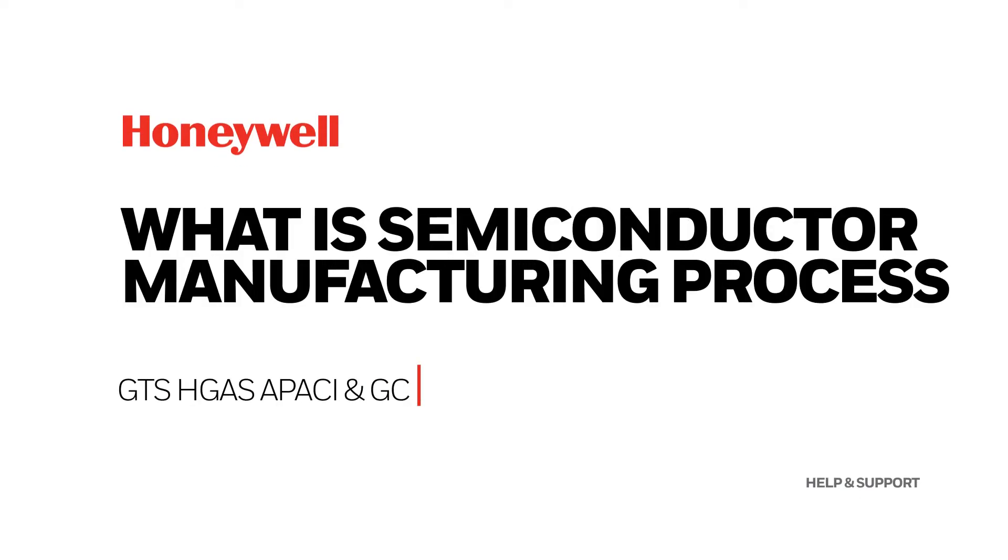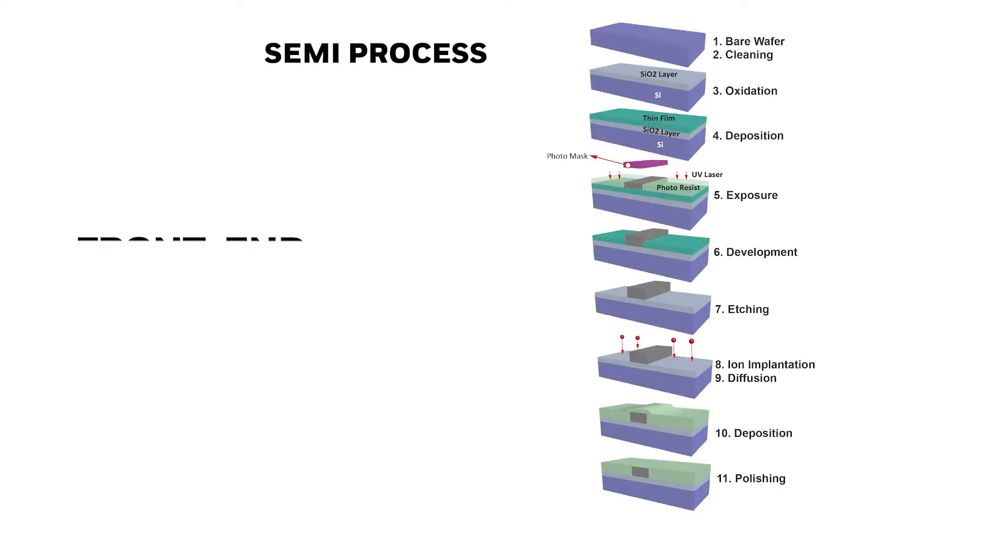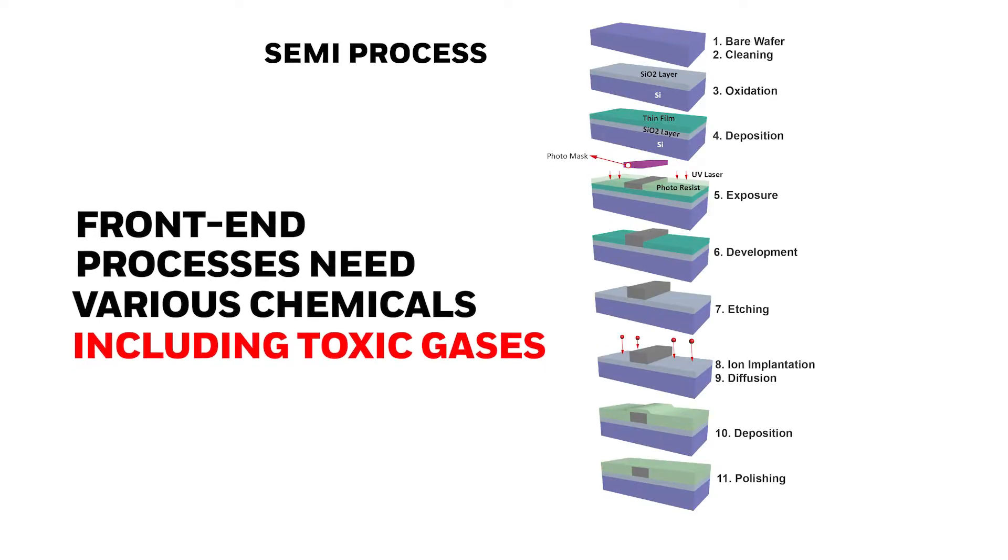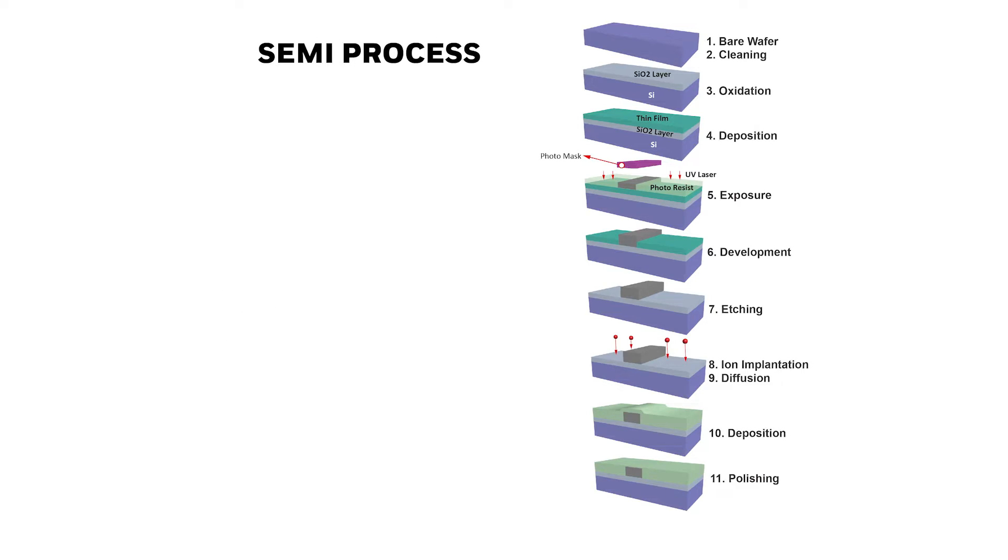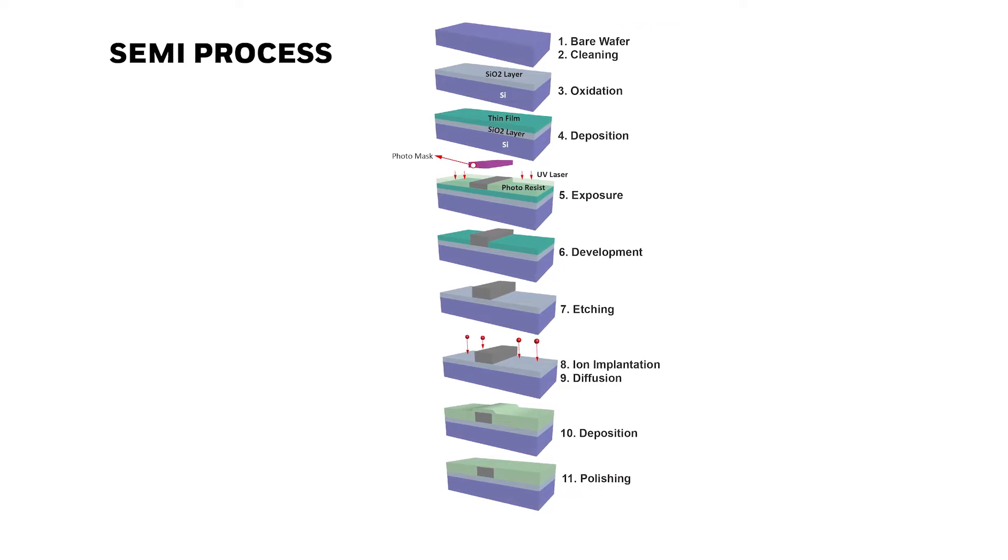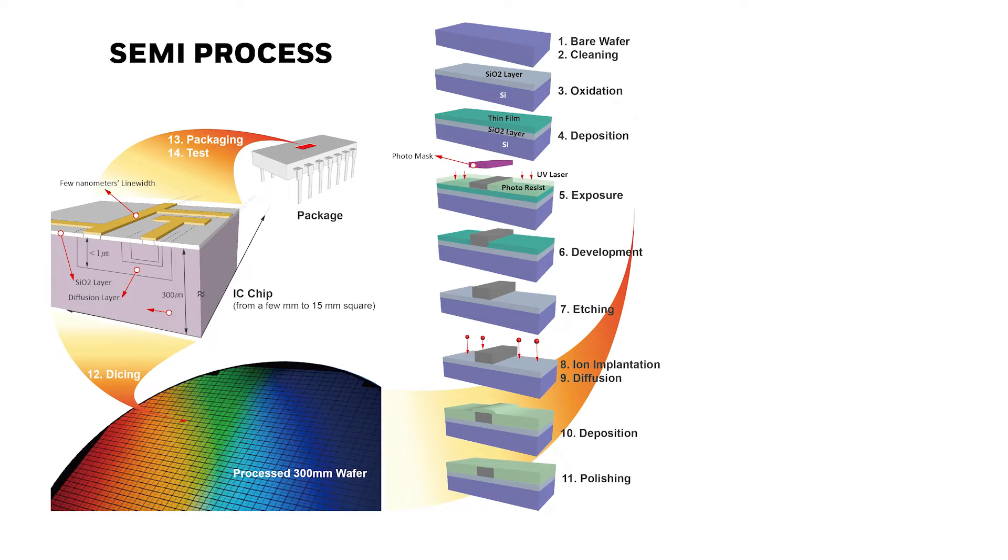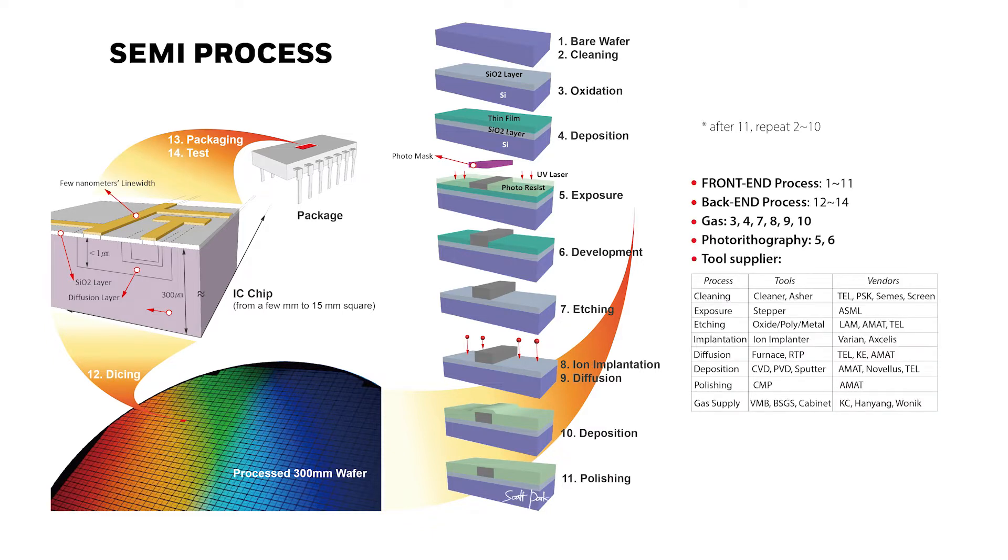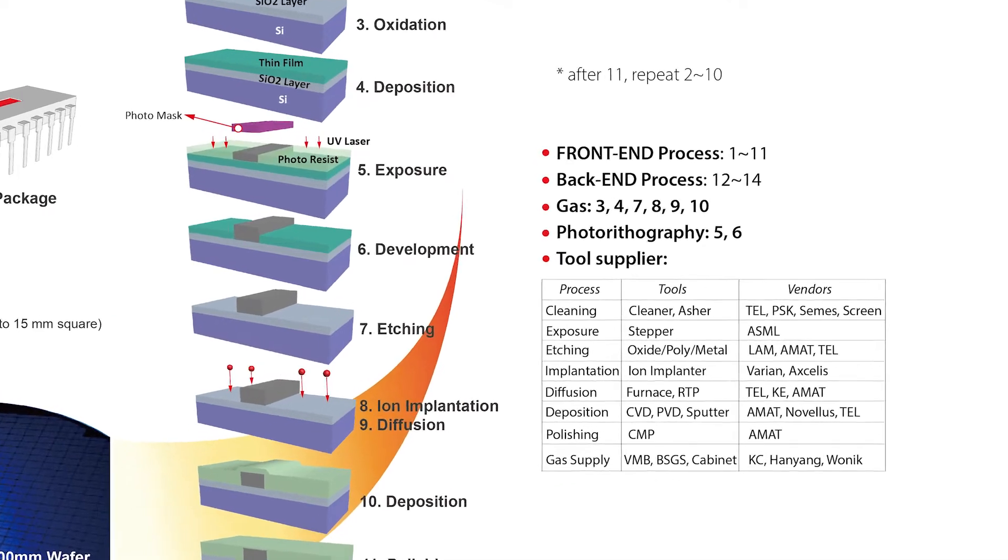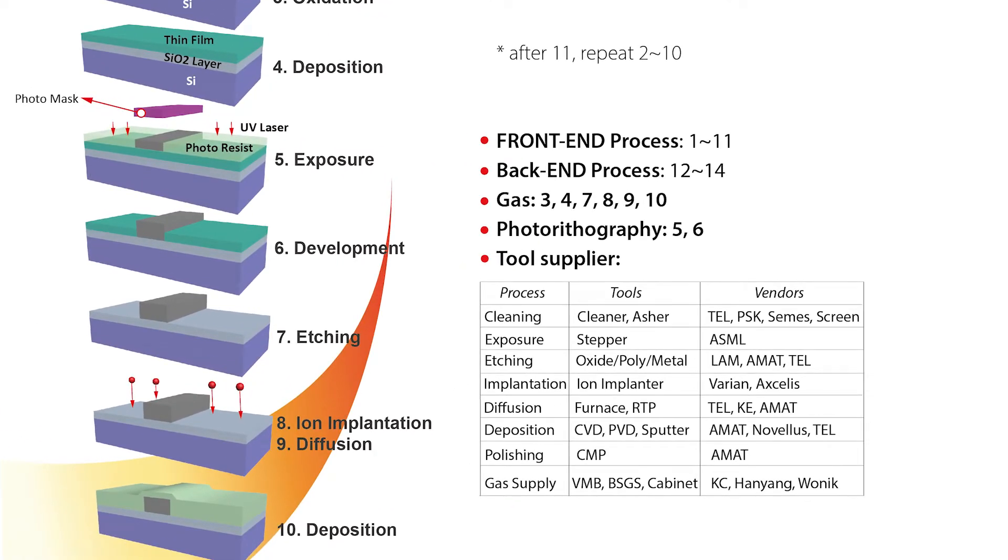What is semiconductor manufacturing process? Front-end process covers 10 important processes, and they are using various chemicals, especially oxidation, deposition, etching, implantation, and diffusion. These processes need hazardous gases. Essentially, those processes should be repeated to build multi-layer thin films. Back-end process covers dicing, packaging, and testing. It's a mechanical process rather than chemical process.